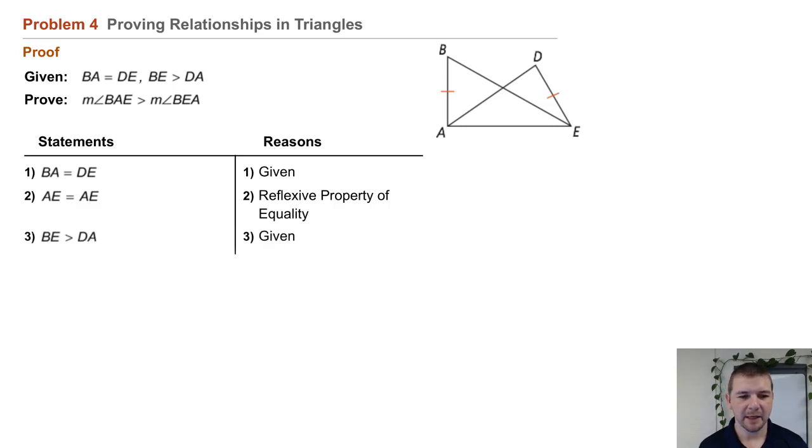Statement 3: BE is greater than DA, that was given. Statement 4: the measure of angle BAE is greater than the measure of angle DEA by the converse of the hinge theorem.